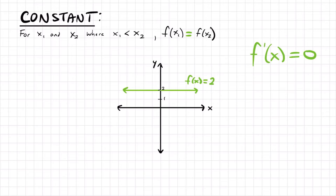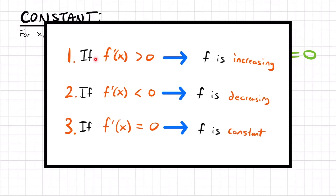Now that we've looked at increasing, decreasing, and constant functions and how they relate to slope and the first derivative, we can come up with three guidelines: if the derivative of a function is greater than 0, the function is increasing; if the derivative is less than 0, the function is decreasing; and if the derivative equals 0, the function is constant. We can apply these guidelines not only to an entire function, but to intervals or sections of functions.